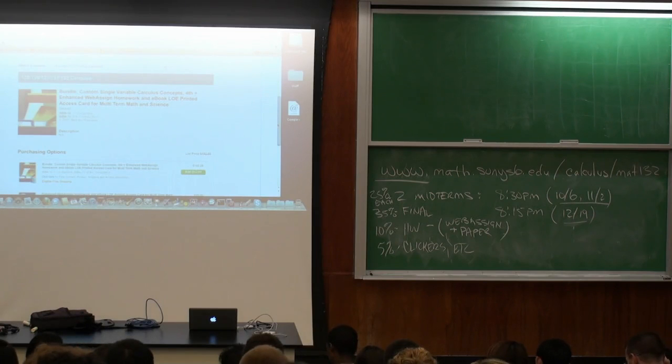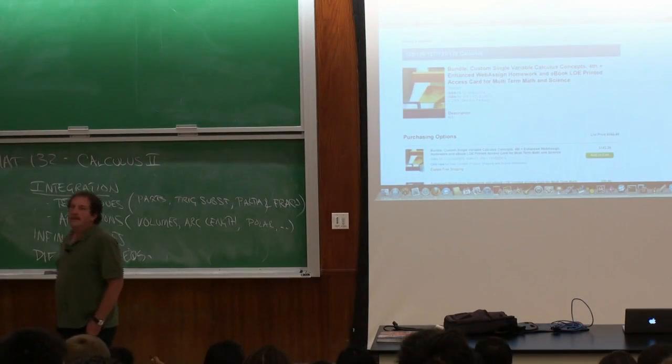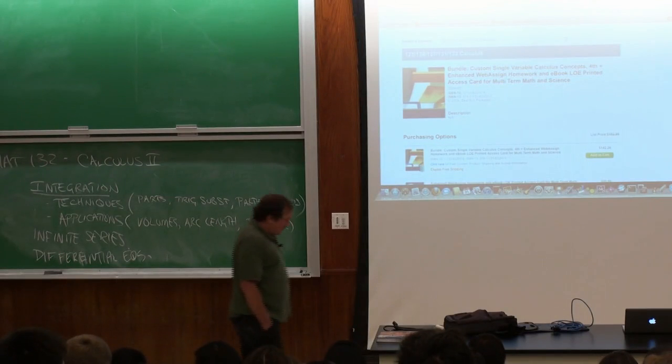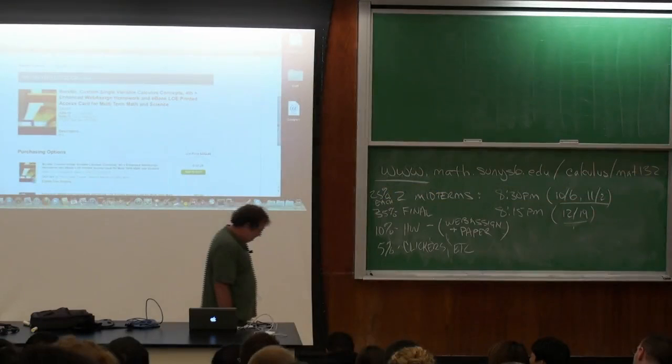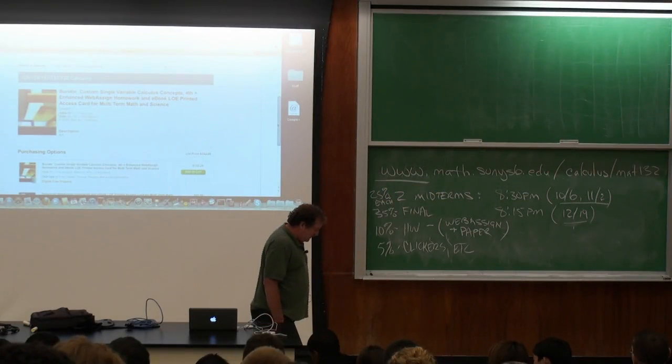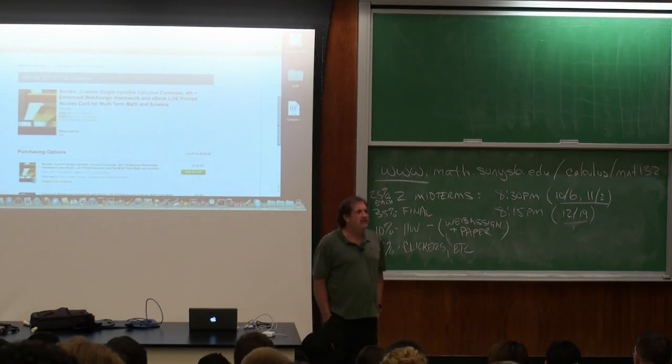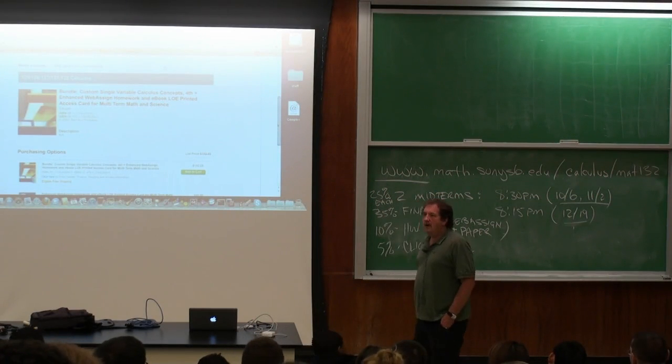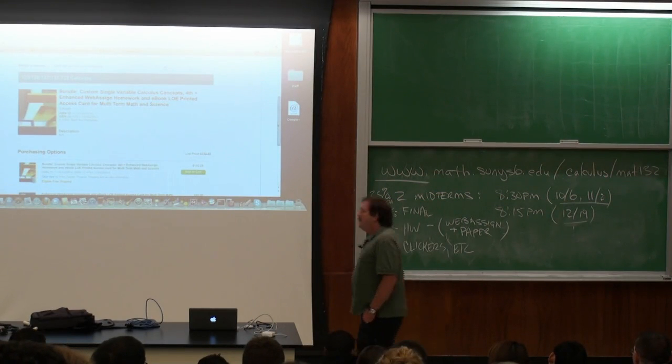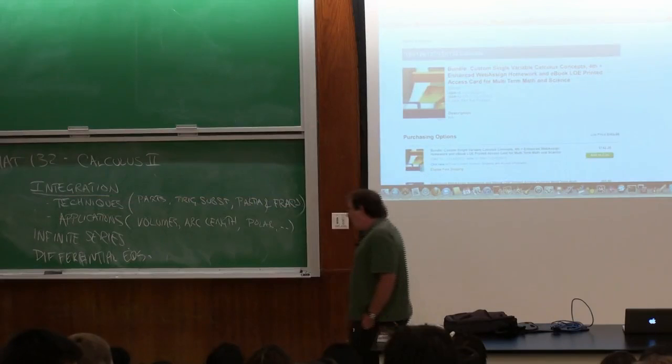Another option. You can buy WebAssign without the textbook for around $47. And you can buy the third edition of the textbook, which is almost the same as the fourth edition. Used copies of the third edition are available for $5. So I know for a lot of people money is an issue. And I try to be sensitive to that.